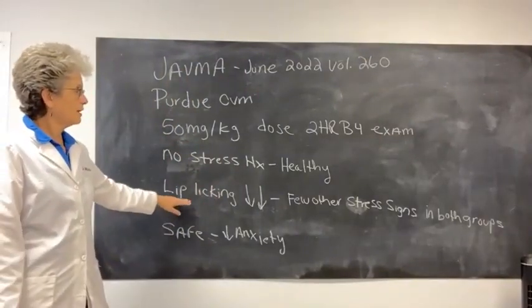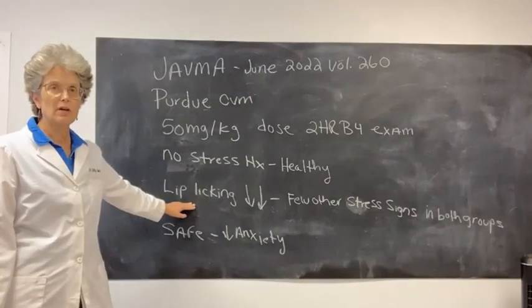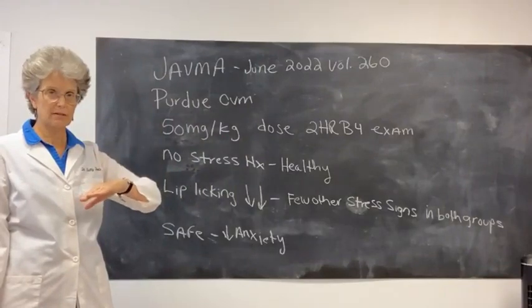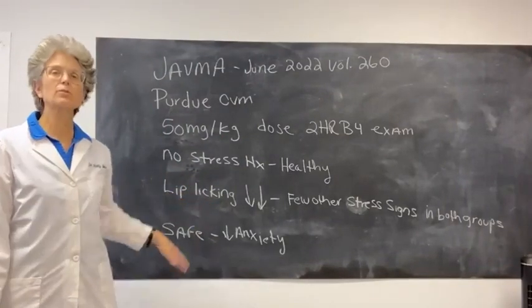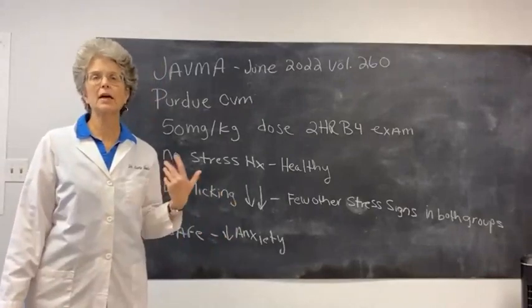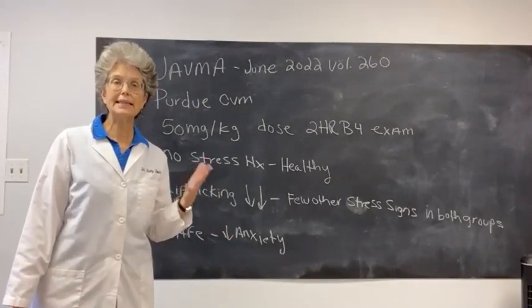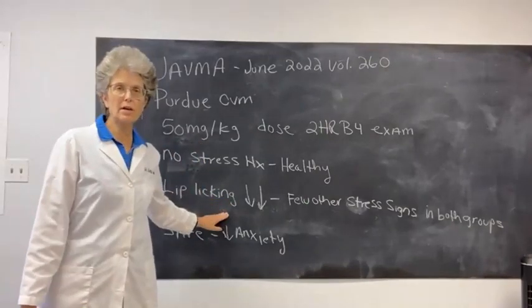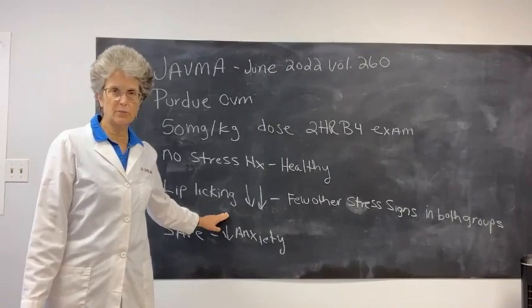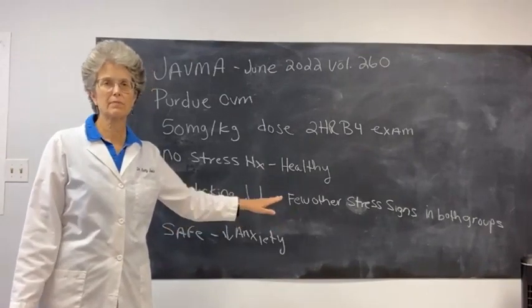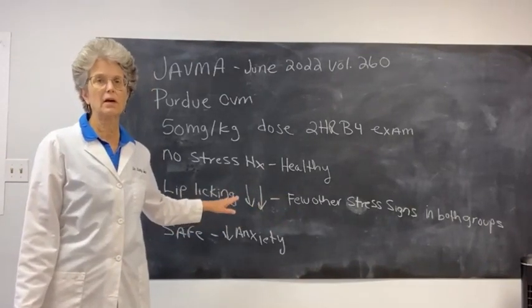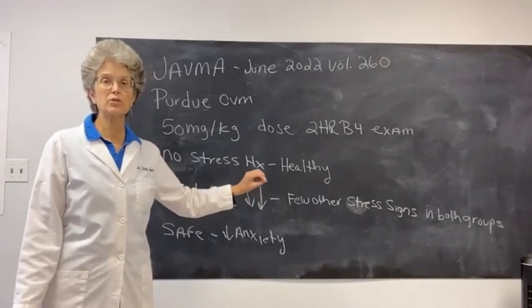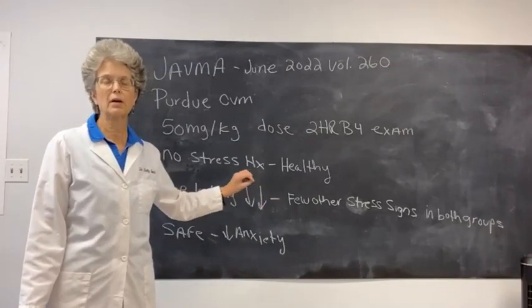Now, the primary change for the dogs having had gabapentin versus not was the amount of lip licking. And so we know lip licking is a sign of stress. It's a low level sign, yet it is a sign of distress. The cortisol levels in the saliva were not different at all between the placebo group and the gabapentin group. And the retinal temperatures also did not differ between the placebo group and the gabapentin group.